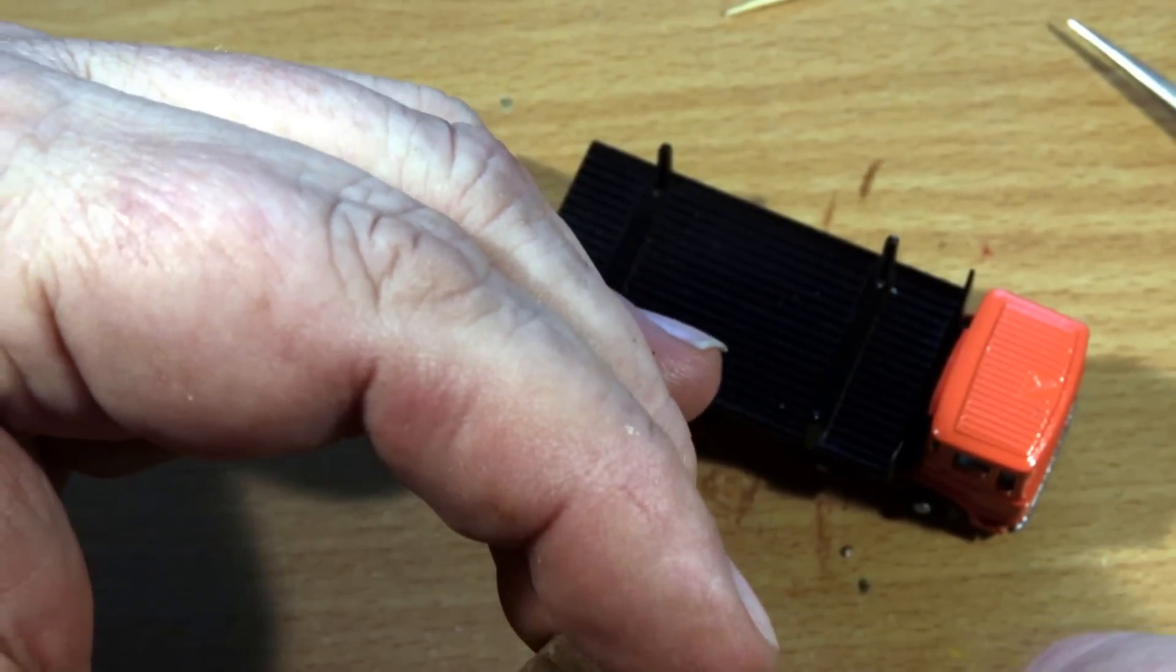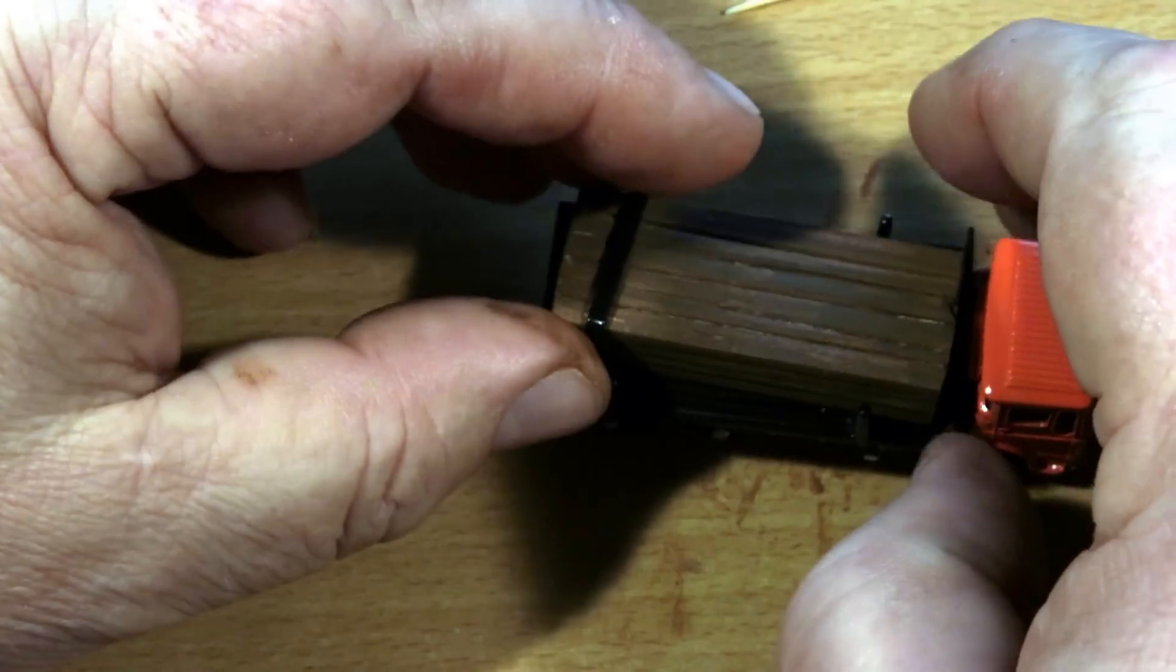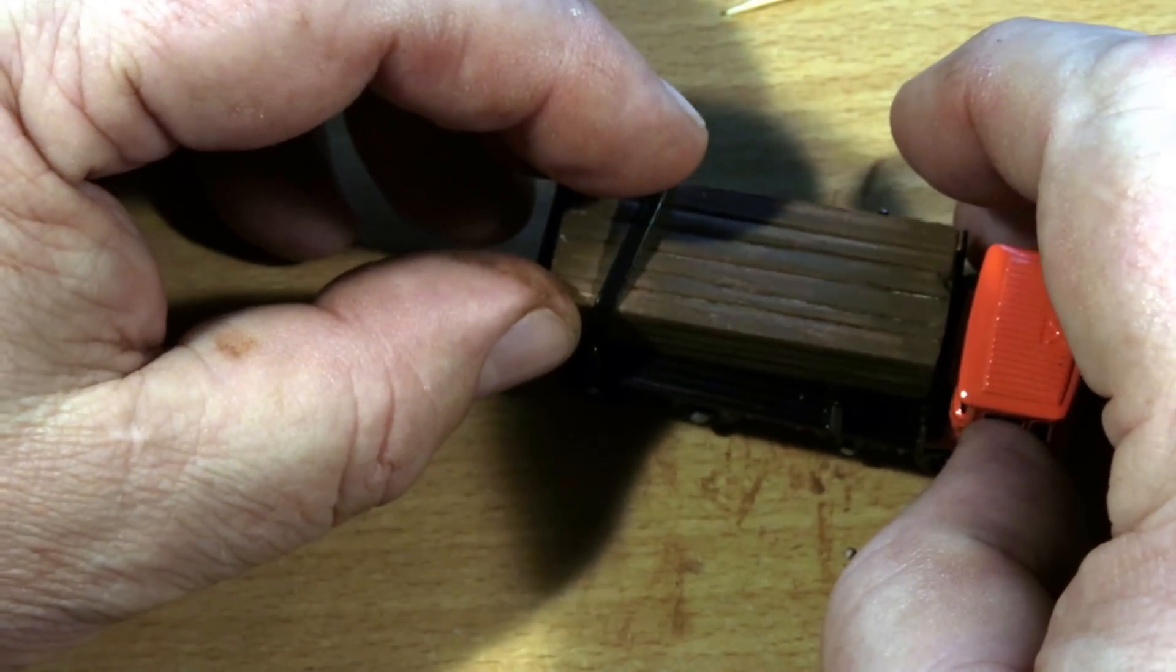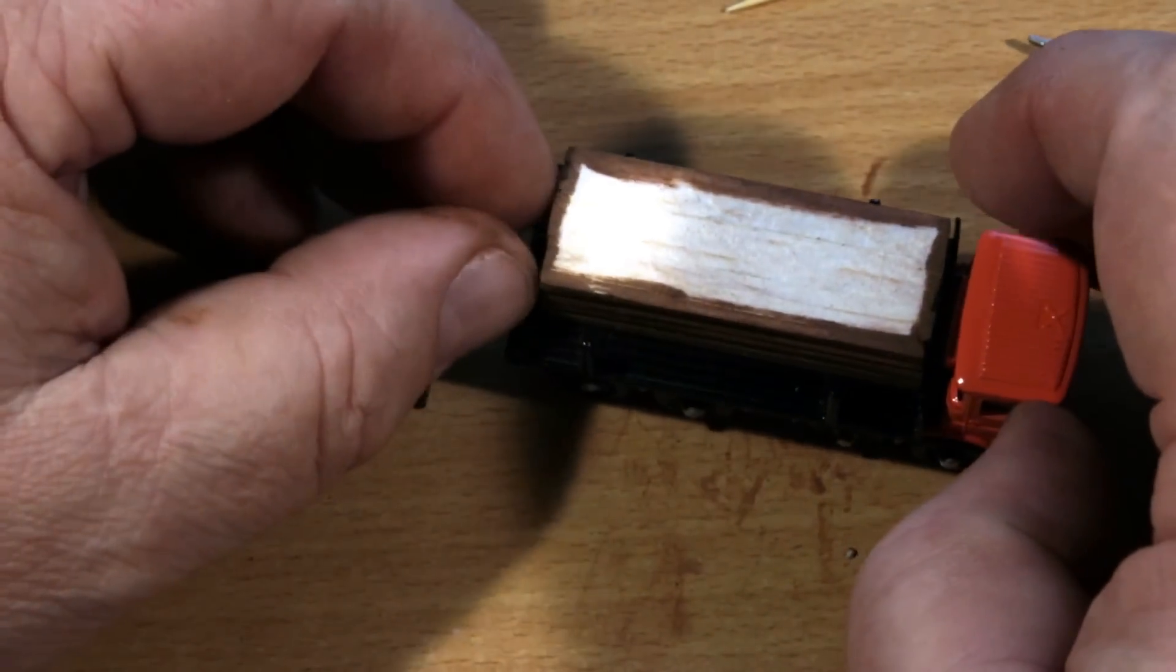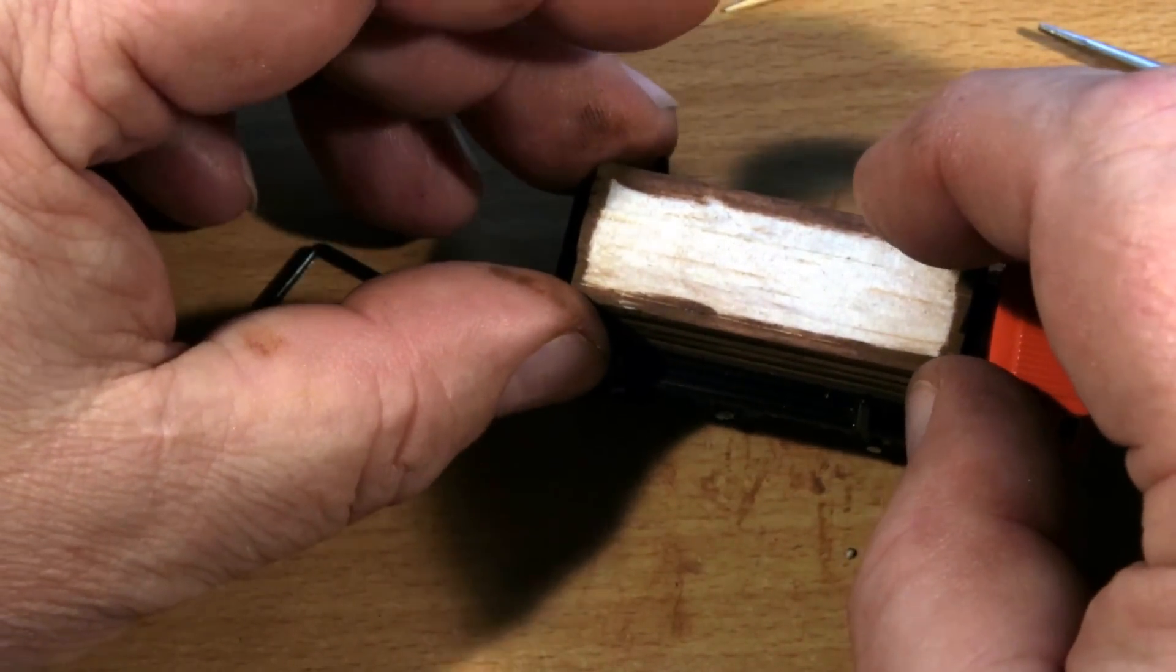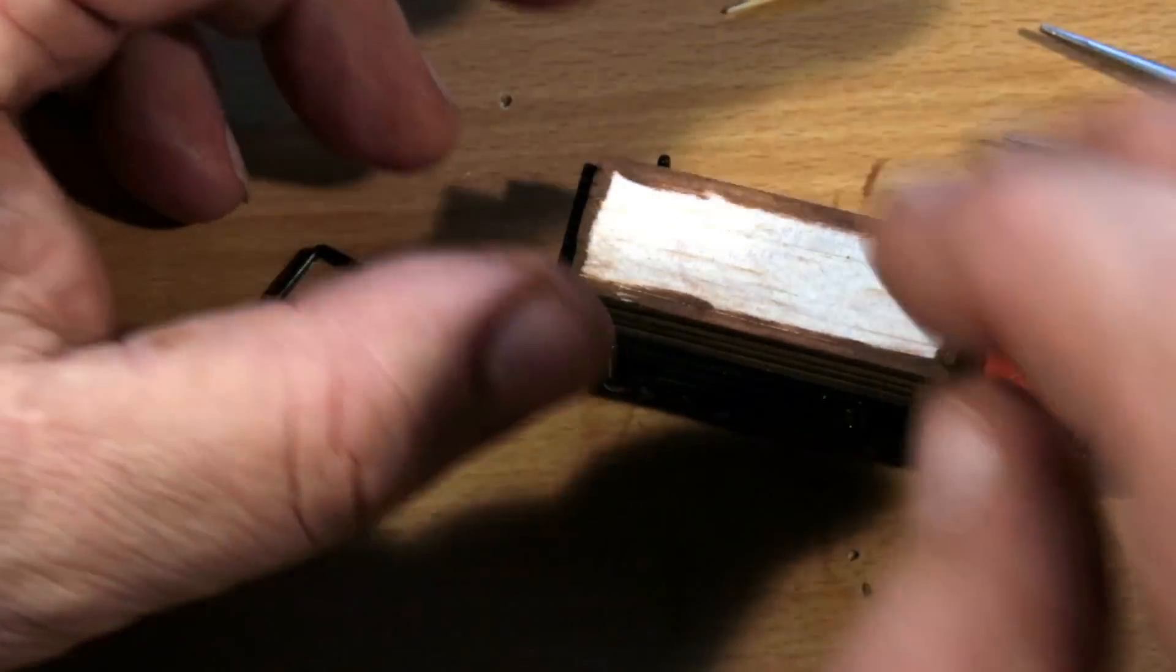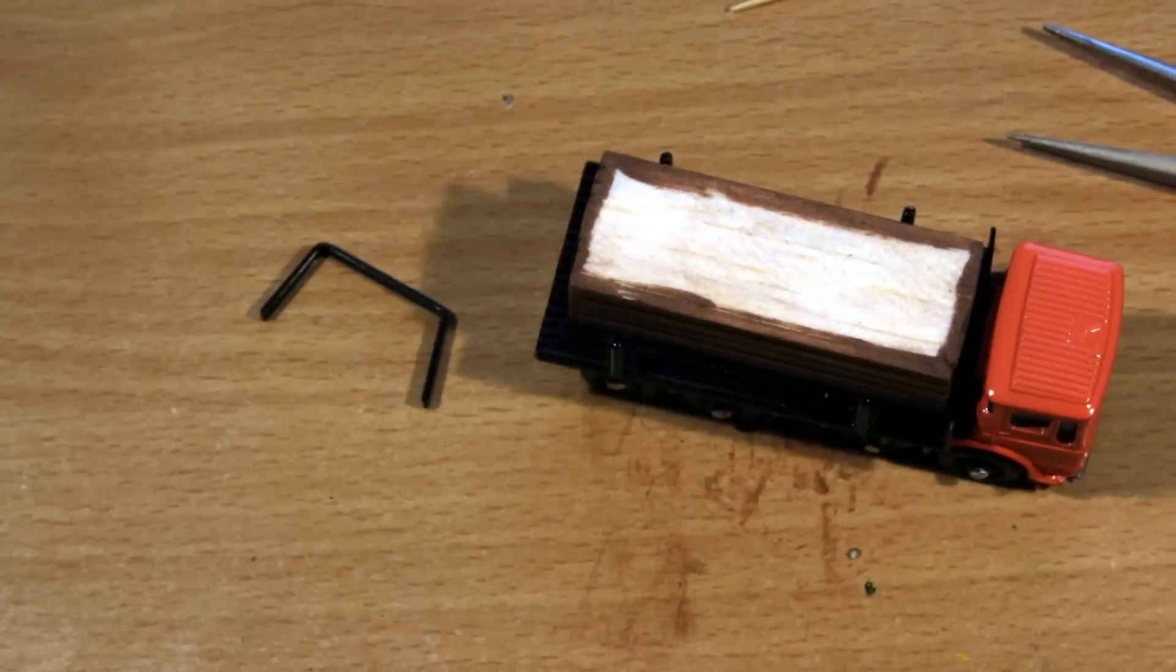And I just held it over the lumber load and then cut the side pieces with a side cutter to fit the appropriate length so that when I put it on the model, it would line up with the two stakes on either side. And you can see I left the bottom untouched. I was not going to attach it to the model. I just wanted it to sit on the model.